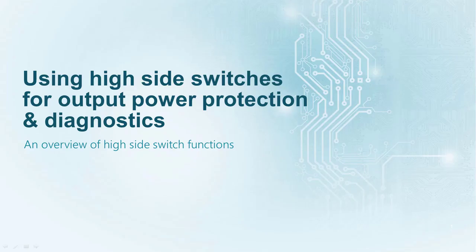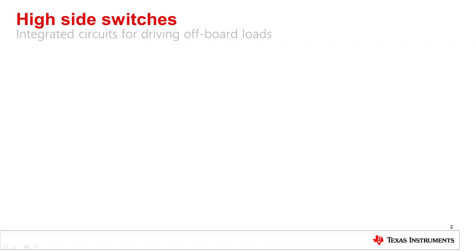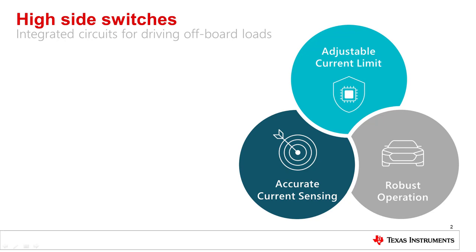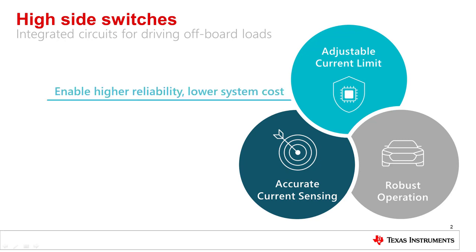Hello and welcome to Using Hi-Side Switches for Output Power Protection and Diagnostics, an overview of Hi-Side switch functions. TI's Hi-Side switches are reliable, accurate, and qualified solutions for providing comprehensive protection for off-board loads. Hi-Side switches have an adjustable current limiting mode which yields high reliability when it comes to protecting against short circuit or in-rush current events.